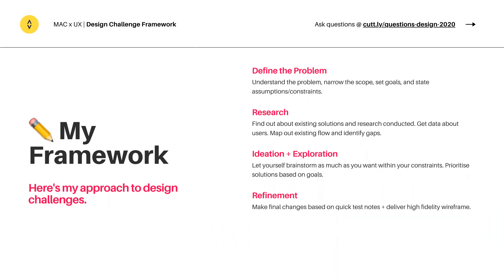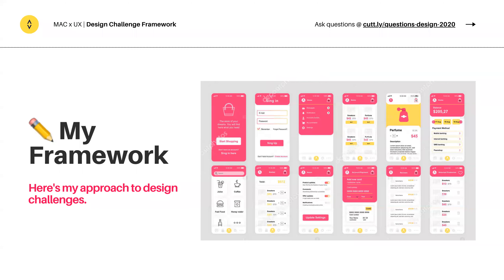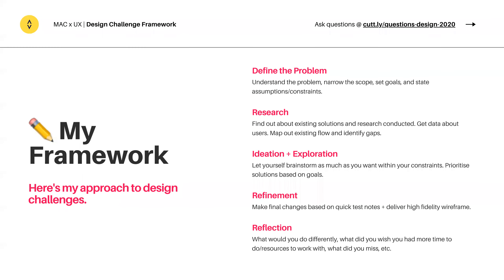The second to last section in my framework is refinement. This is when you make final changes based on your testing notes. Before you get here, you evaluate your design, and depending on what could be improved, you make final changes and create your high-fidelity prototypes if needed. Lastly, don't forget the reflection and retrospective. Always acknowledge: what would you do differently? What do you wish you had more time to do? What would you do if you had more resources? Are there any other next steps for your specific project?